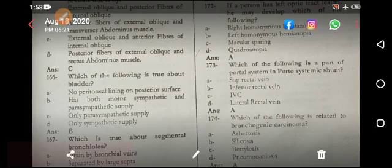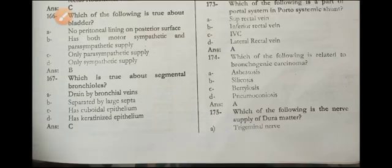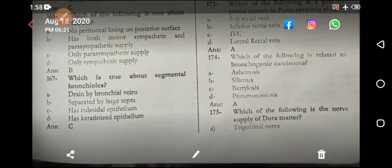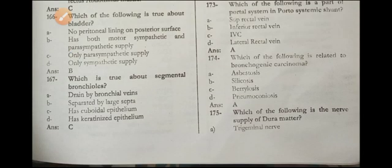The following is a part of the portal system: the superior rectal vein. Regarding bronchogenic carcinoma, if there is smoking it is bronchogenic CA; if not, then asbestosis. The nerve supply of the dura mater is the trigeminal nerve.